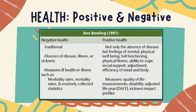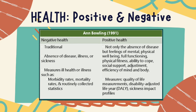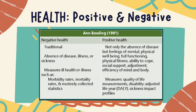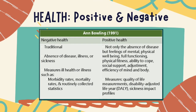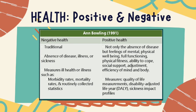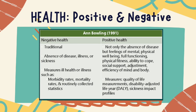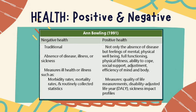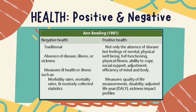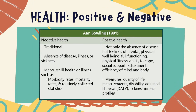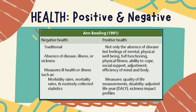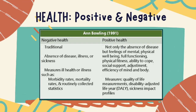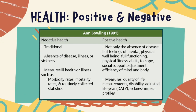DALYs are calculated by taking the sum of two components in a formula: DALY = YLL + YLD. The DALY relies on an acceptance that the most appropriate measure of the effects of chronic illness is time — both time lost due to premature death and time spent disabled by disease. One DALY, therefore, is equivalent to one year of healthy life lost. Japanese life expectancy statistics are used as the reference standard.